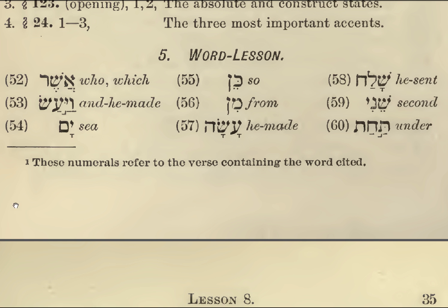Vocabulary: Asher — who or which. Vayangas — and he made. Yam: sea. Kin: so. Min: from. Ngasa: he made. Shalah: he sent. Sheni: second. Tahat: under.